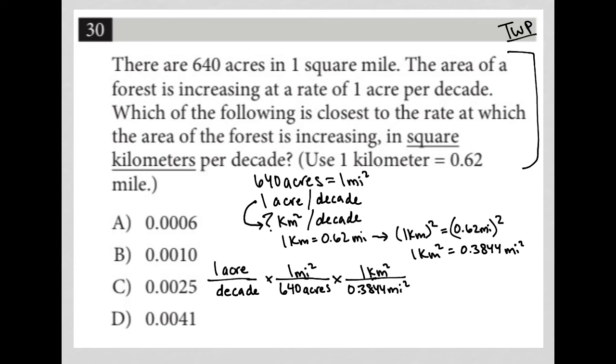And if we look at our units, I have acres here, which crosses out with acres there. I have miles squared here, which crosses out with miles squared there. And we have pretty much satisfied what we're looking for. We have kilometers squared in the numerator, and we have decade in the denominator. So we have everything we need.